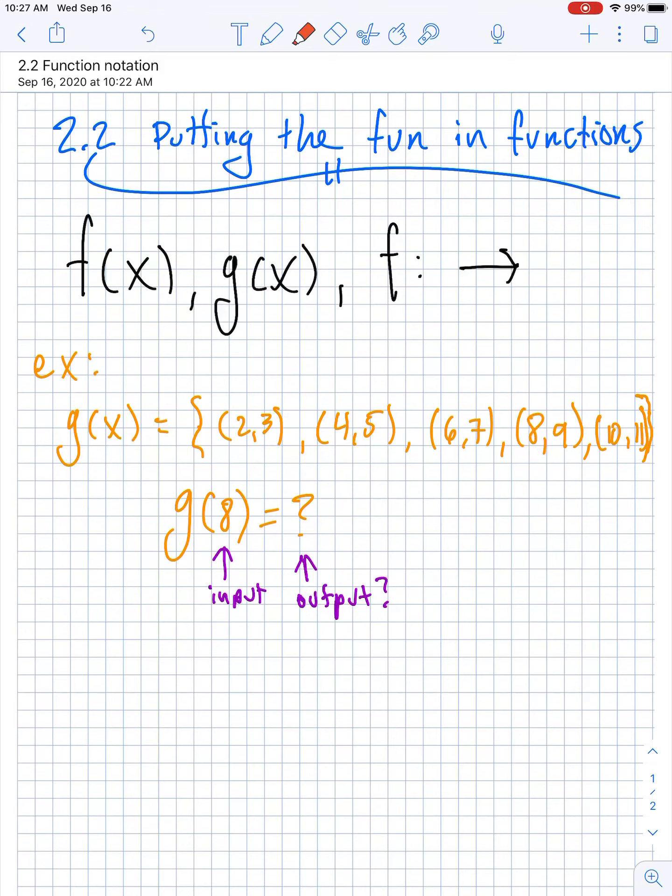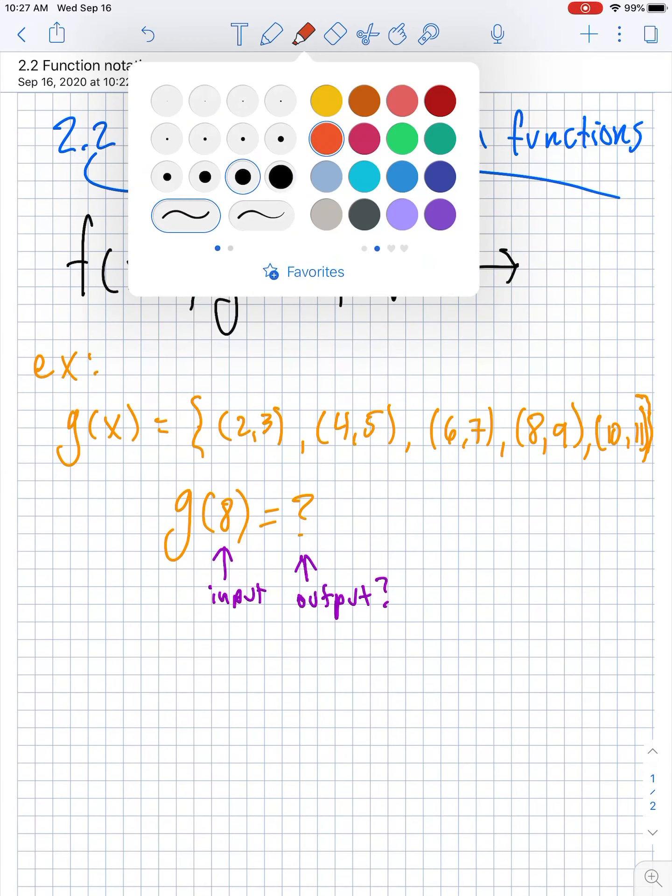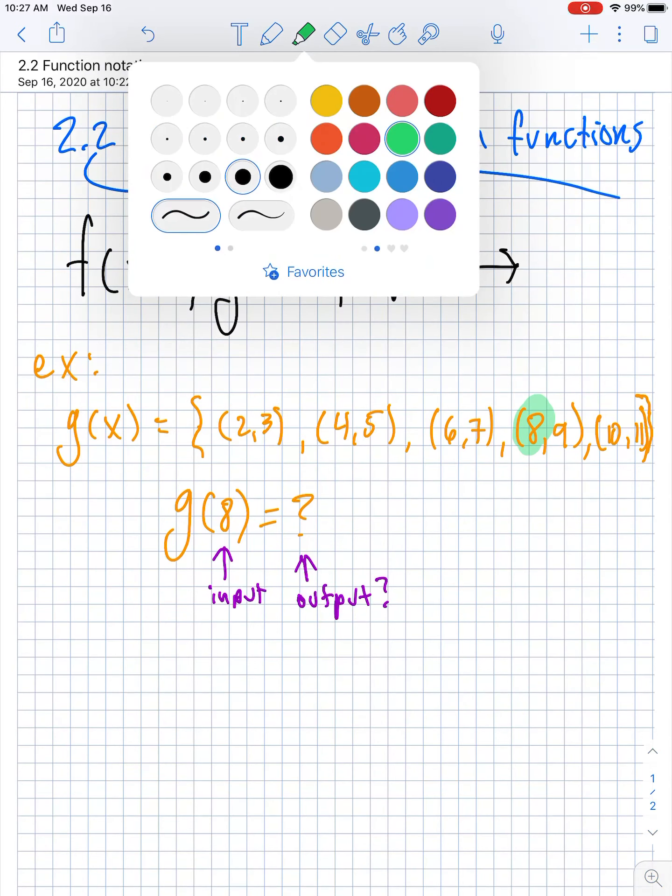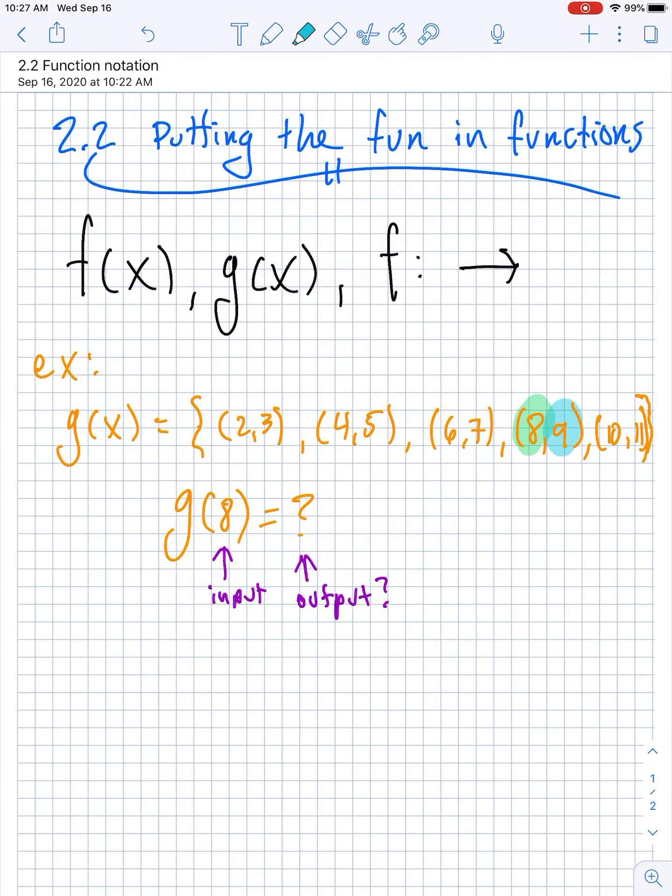Oh that's a bad color, orange on orange. Something will show up there. There we go. This is an input of 8, and when you put in an input of 8, you get out an output of 9. So the answer to this question would be g of 8 is equal to 9, because when you put an 8 in, a 9 comes out. And these are sloppy, I'll get better. My board handwriting is gorgeous, but the small iPad handwriting I'm still getting used to.